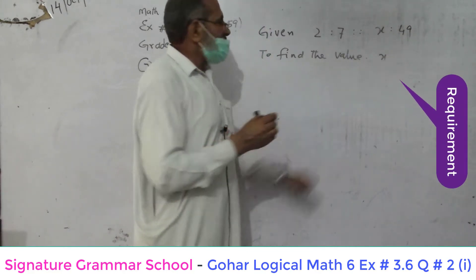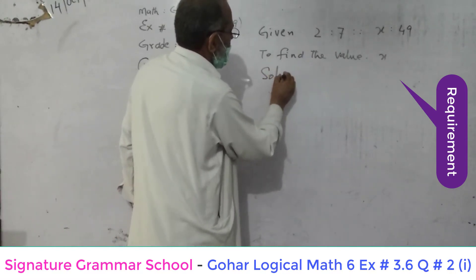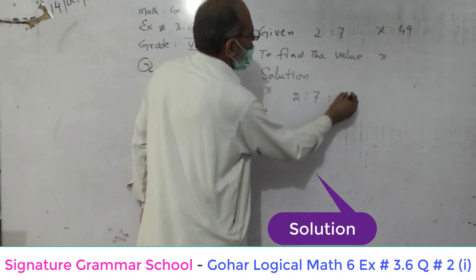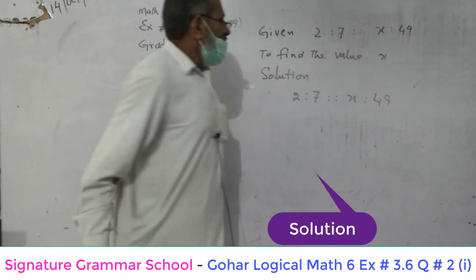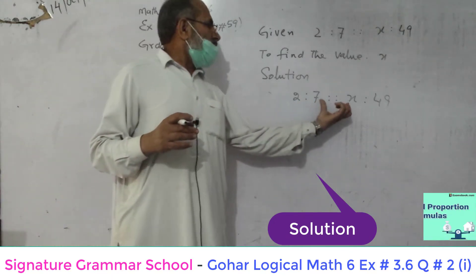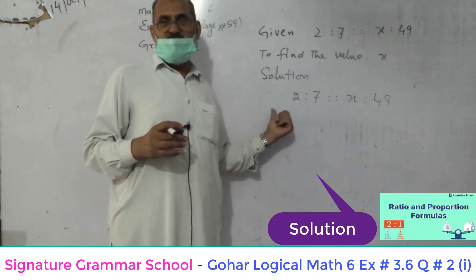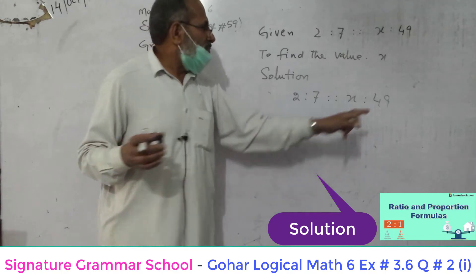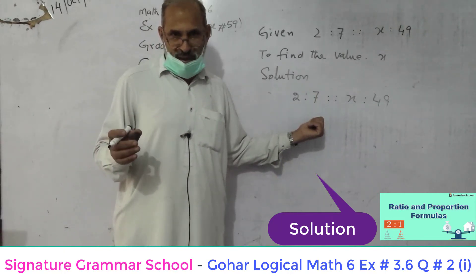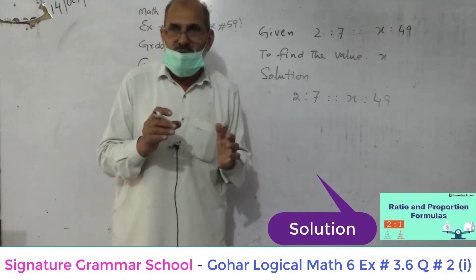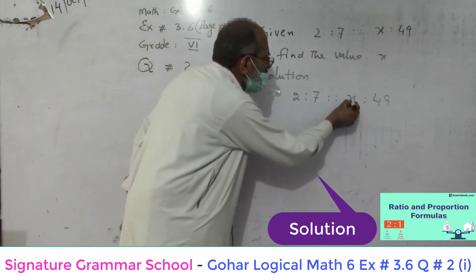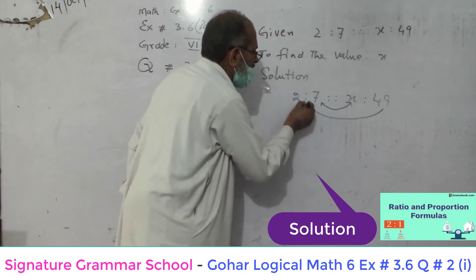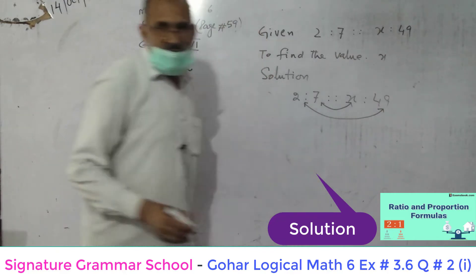Here it is x. And solution — we will rewrite the same question: 2 ratio 7, proportion x ratio 49. We are having, and you can see, if we are having wasteng — or if we are having tarfan. Wasteng and tarfan mean means and extremes. So we are having tarfan and we are having wasteng. So according to the formula, these wasteng — means — when multiplying with each other, and these tarfan — extremes — when multiplying with each other.